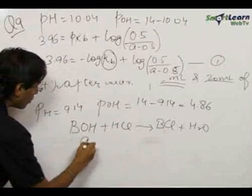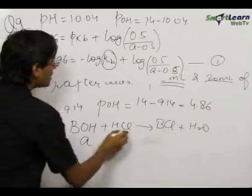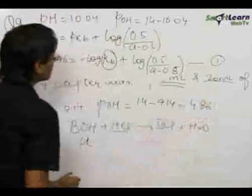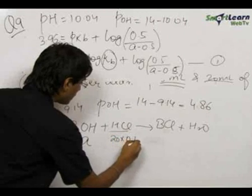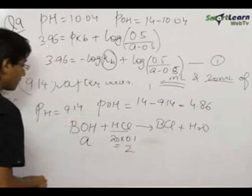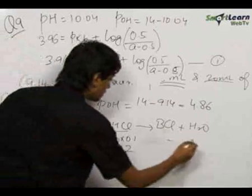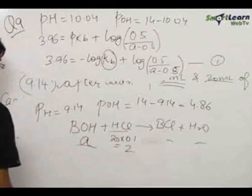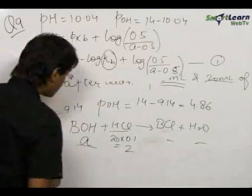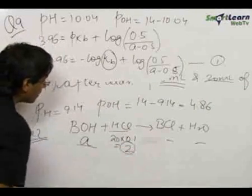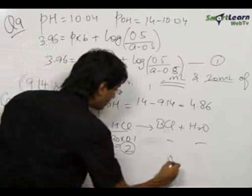The initial number of moles of BOH let it be equal to A. Now, HCl added is 20 ml. So the number of ml of HCl is 20 into 0.1 that is 2 ml. Let the initial number of ml as before was A. This is 0 and 0. This is case 2. When 20 ml of HCl has been added, when this HCl completely reacts, the left ml of BOH is A minus 2 and this is 2.